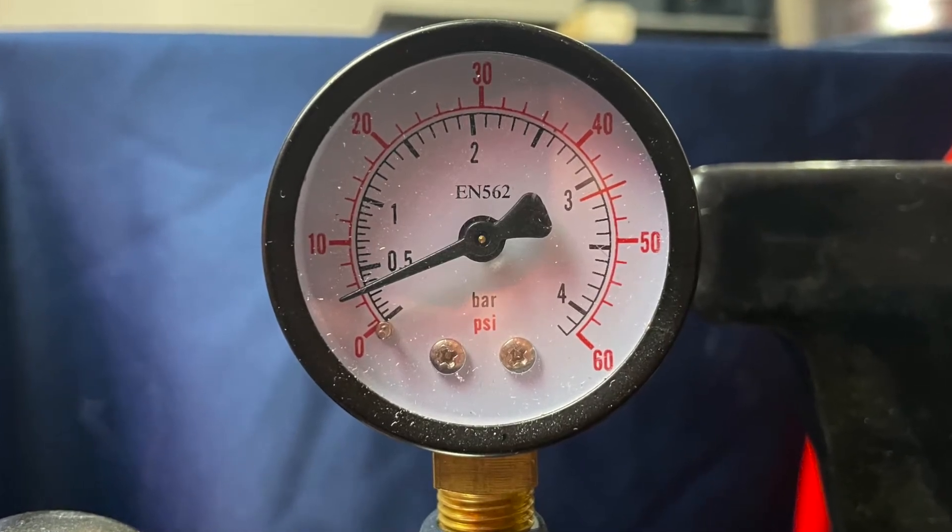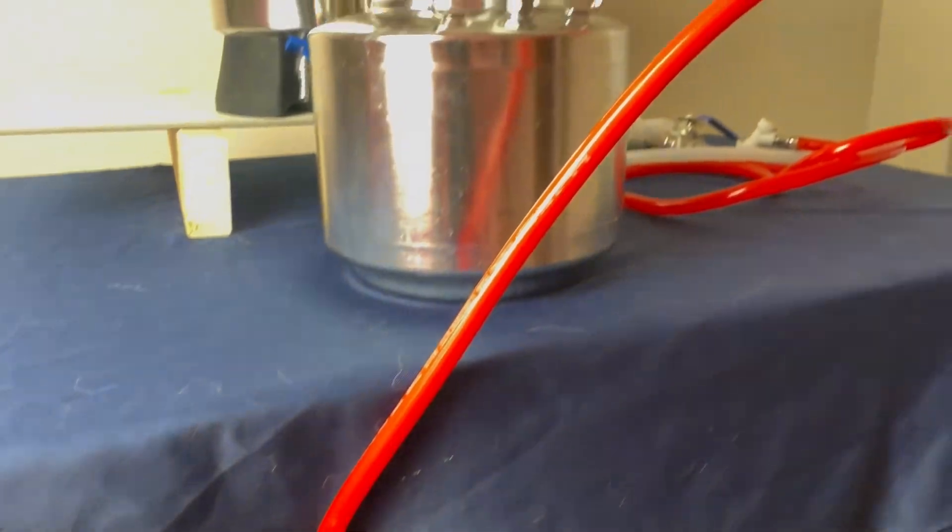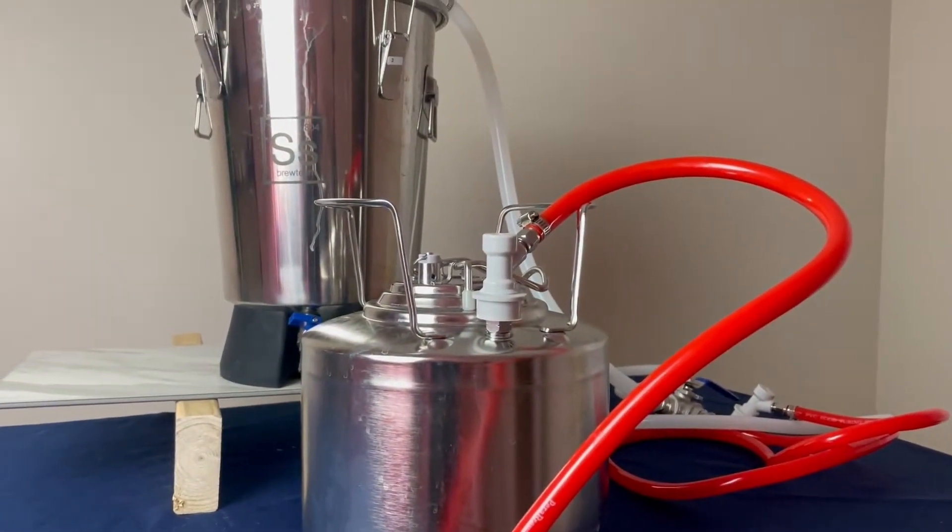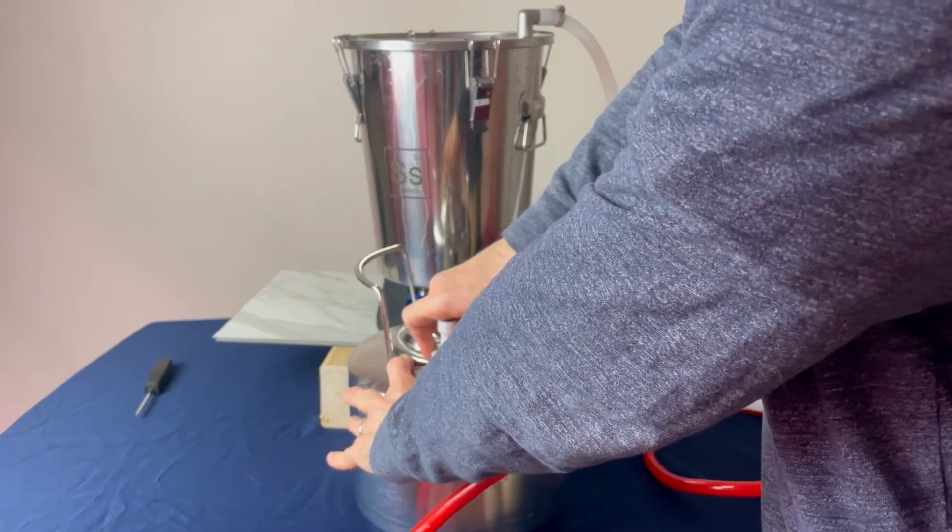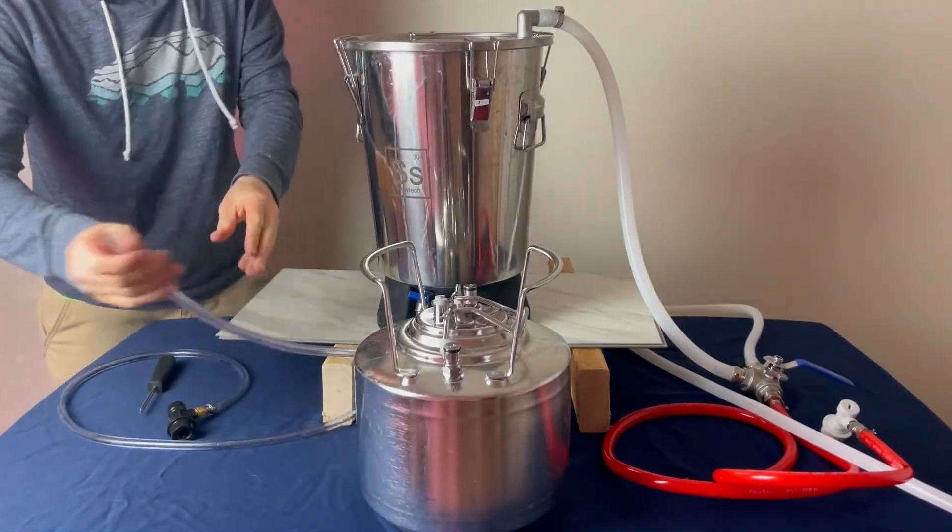As you can see, we can follow that from the tank into the CO2 or into the keg, moving it once it's fully pressurized, and then installing the liquid line. This will go on the bottom of the mini ball valve on the bottom of the fermenter.